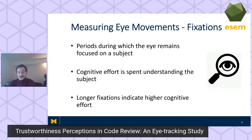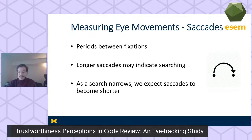We often measure fixations by their duration. The other major feature is saccades — the periods between fixations when the eye is quickly traveling from one point to the next. When saccades are longer and fixations are farther apart, this may indicate a search pattern. As the search narrows, we expect saccades to become shorter. We measure saccades by their duration, and also sometimes by length in pixels or millimeters.